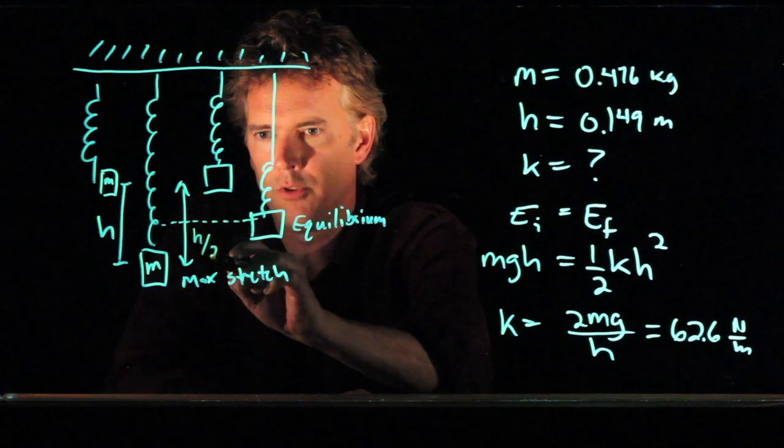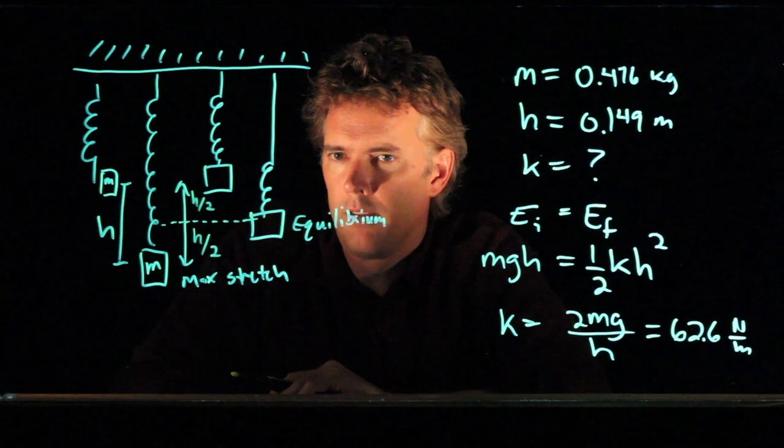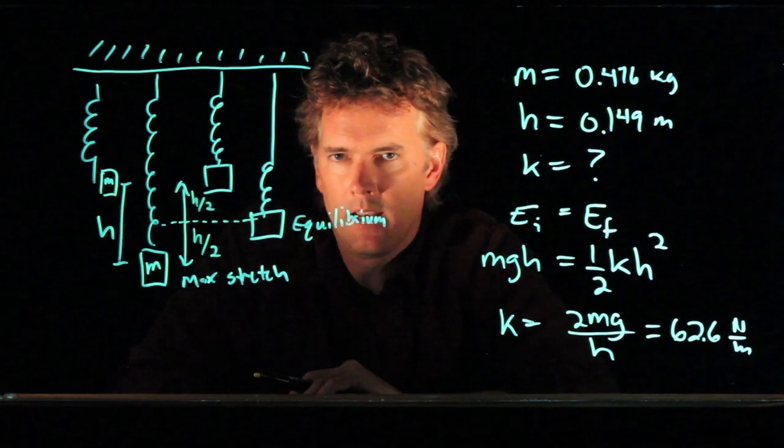We went down h over 2 from it. We went up h over 2 from it. And so the equilibrium position is directly at h over 2.